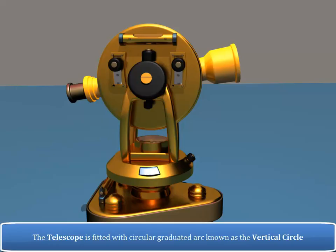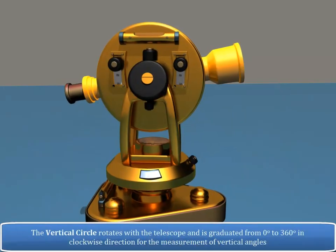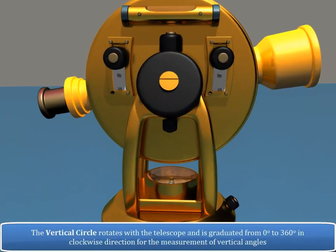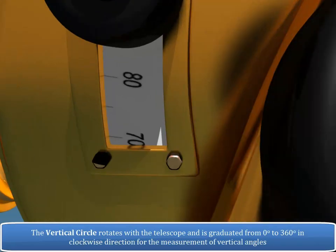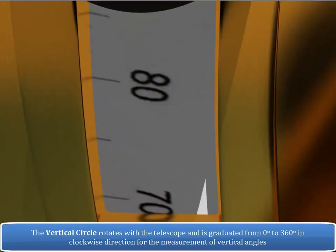The telescope is fitted with circular graduated arc known as the vertical circle. The vertical circle rotates with the telescope and is graduated from 0 degree to 360 degrees in clockwise direction for the measurement of vertical angles.